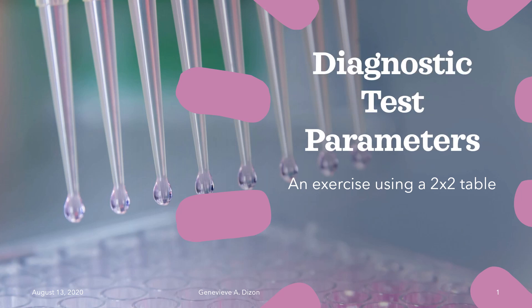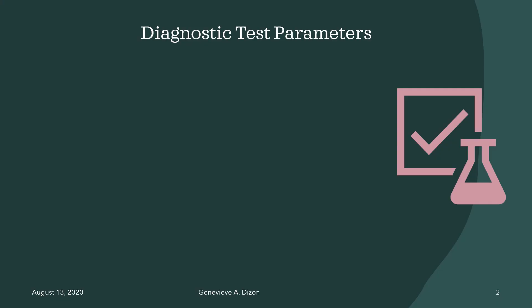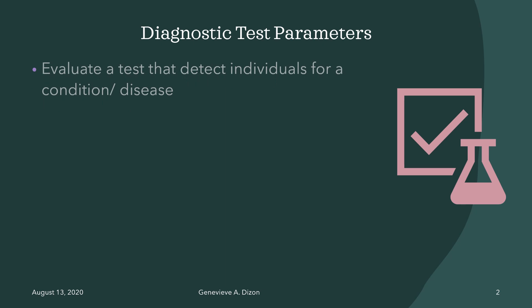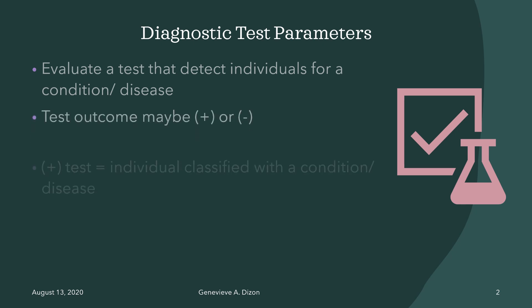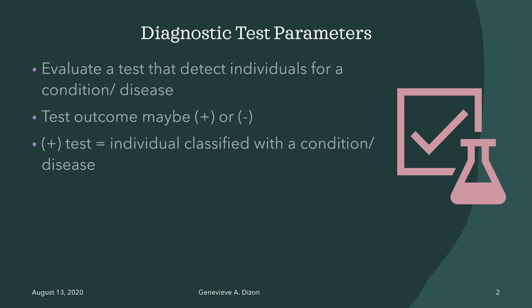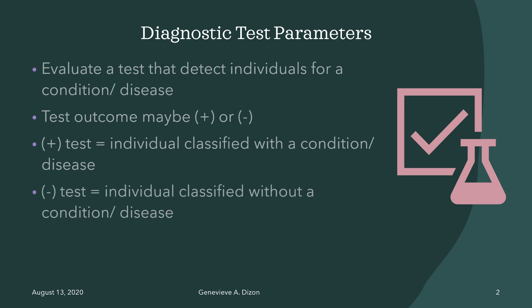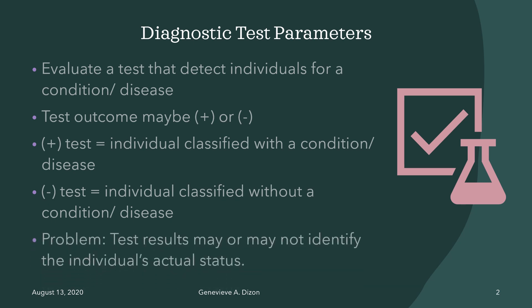Hello everyone! Let's talk about some diagnostic test parameters with an exercise using a 2x2 table. Diagnostic test parameters are used to evaluate a test that detects individuals for a condition or a disease. A diagnostic test result may either be a positive or a negative test outcome. A positive test result indicates that an individual is classified with a condition or a disease; a negative test result classifies the individual as not having the condition or disease. The problem is that test results may or may not identify the individual's actual status. Therefore, diagnostic test parameters are used to evaluate if these diagnostic tests give a reliable result.